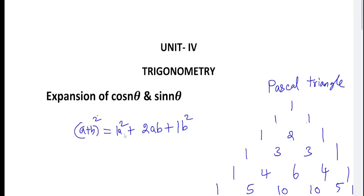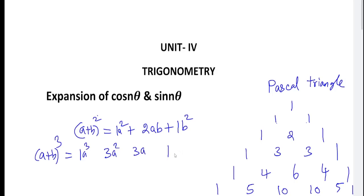The (a+b)² formula gives a² + 2ab + b². For the (a+b)³ expansion, look at row 1-3-3-1 in Pascal's Triangle. First a has power 3, then power 2, then power 1; and b starts at power 0 and increases to power 3. So (a+b)³ = a³ + 3a²b + 3ab² + b³.